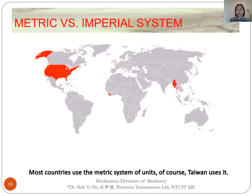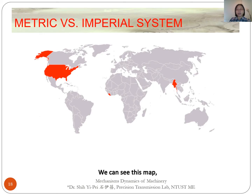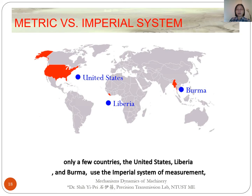Of course, Taiwan uses the metric system, as we can see on this map. Only a few countries — the United States, Liberia, and Myanmar — use the imperial system of measurement.